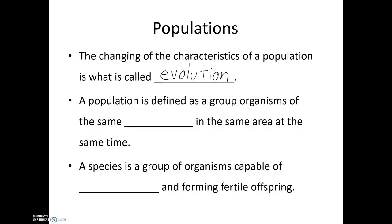A population is defined as a group of organisms of the same species that lives in the same area at the same time. A species is a group of organisms capable of interbreeding and forming fertile offspring — it's a more general term. You could have individuals of the same species found in different populations who, if brought together, could interbreed. A population, however, is made up of those organisms that are in regular contact with each other and have the potential for interbreeding.